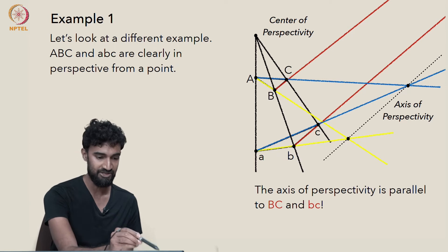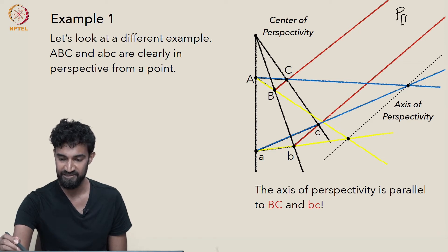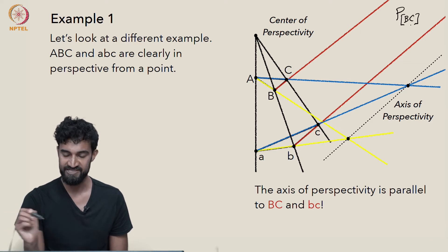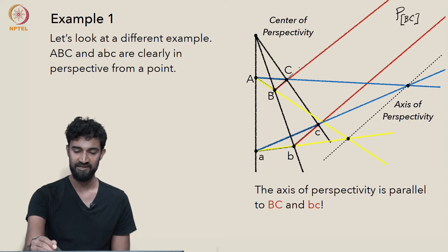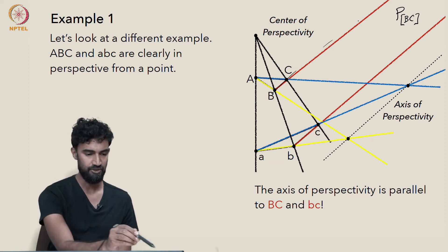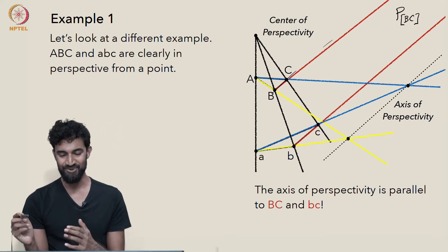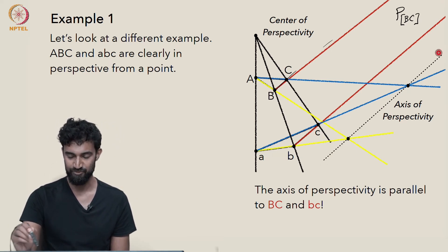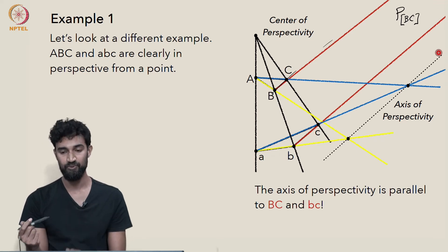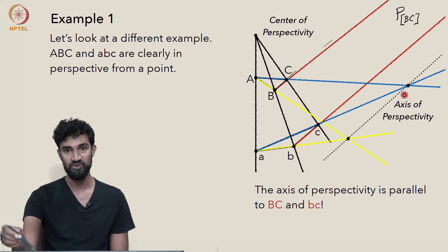As a result, the axis of perspectivity goes through the two finite intersection points, but it's also supposed to pass through the intersection of BC and bc. From the picture, this works out: the axis line is parallel to BC and bc, so all three lines — and the axis — meet at their common point at infinity. Desargues' theorem does hold; it's just that one of the intersection points on the axis lies at infinity.